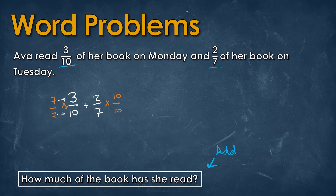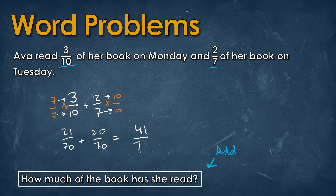Multiplying straight across gives us 21 over 70 plus 20 over 70. Adding these two fractions gives us 41 over 70 as the final answer.